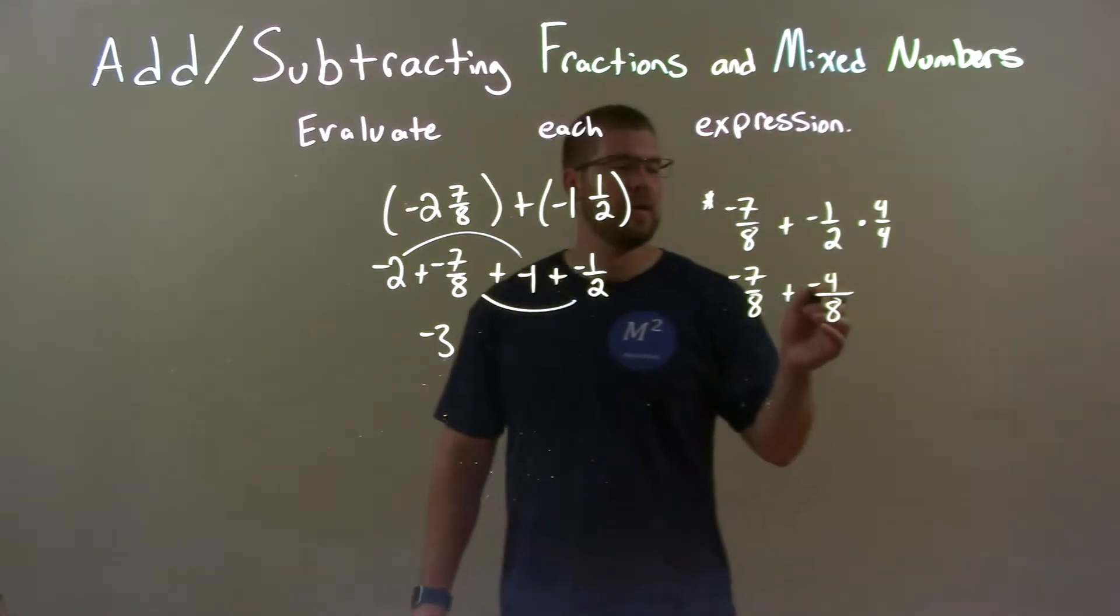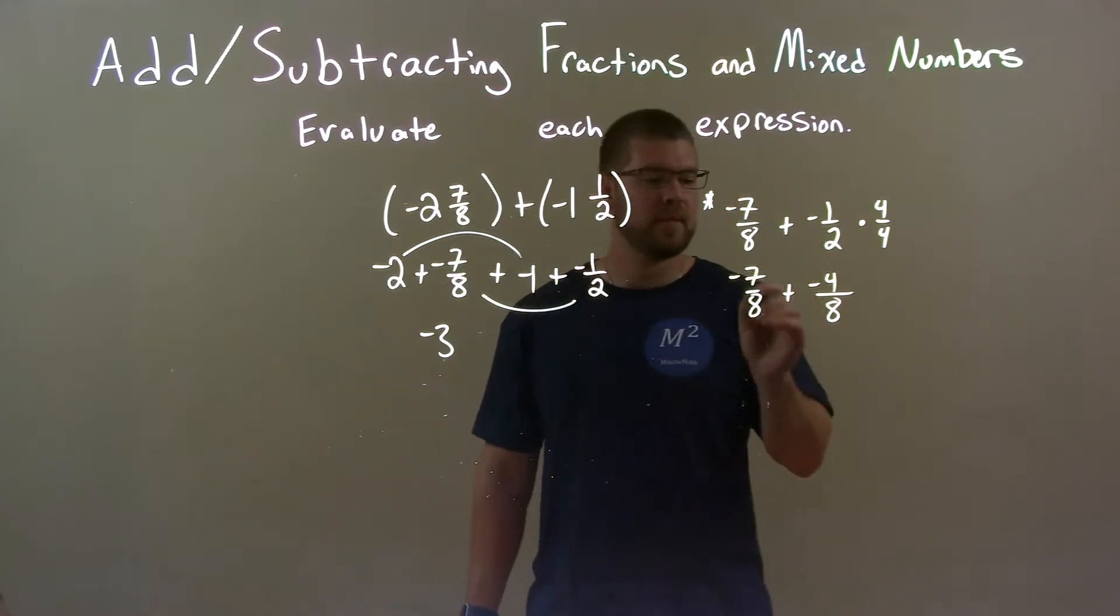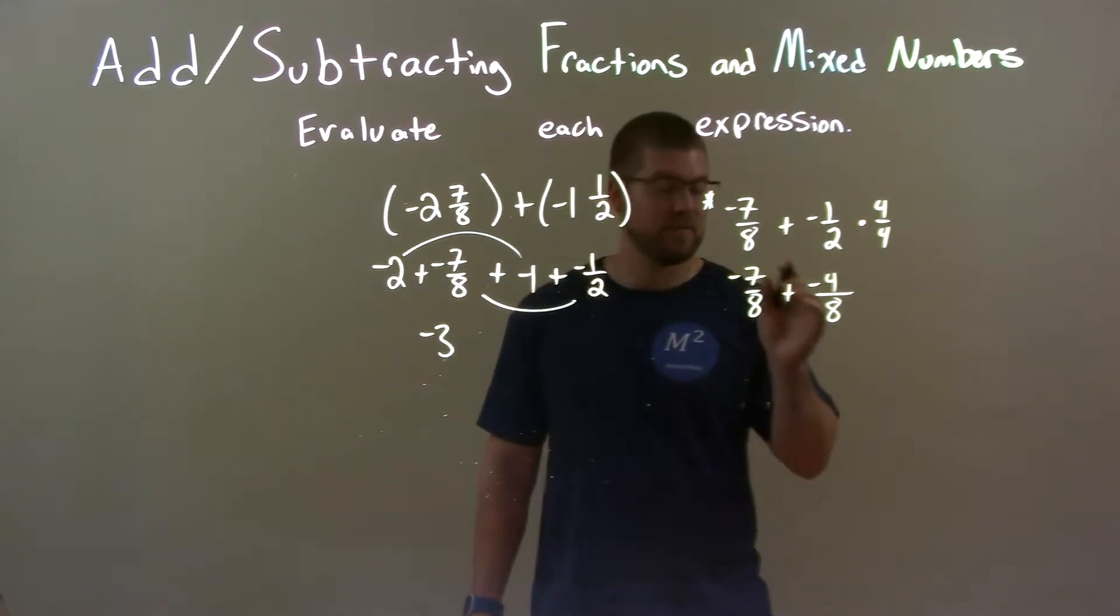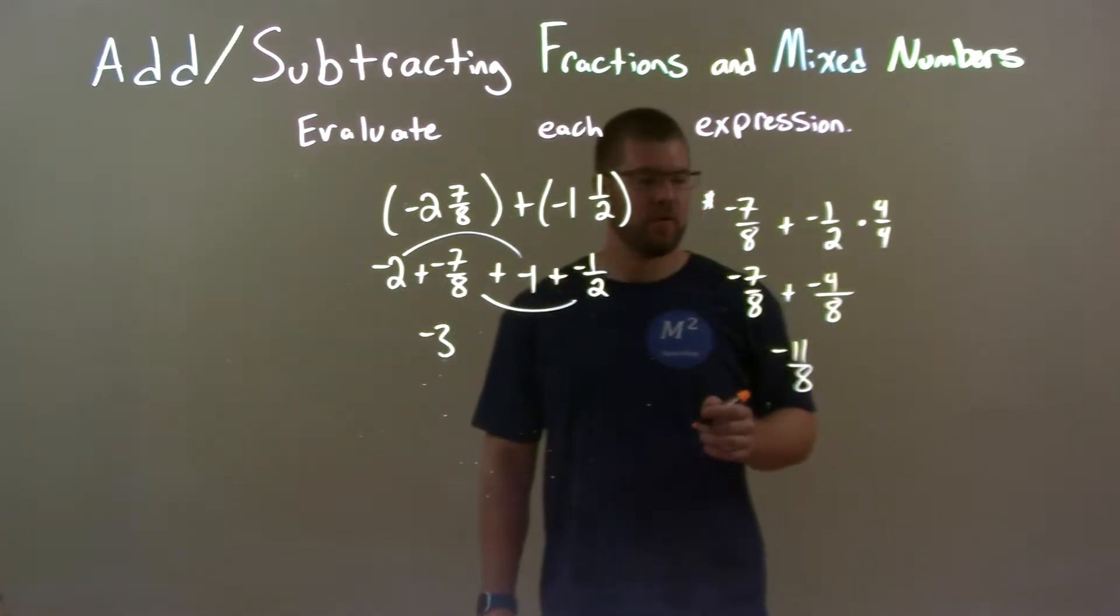Now, we have the same base, same denominator. So, we can add the numerators. Negative 7 plus negative 4 is a negative 11 over 8. So, we have negative 11 over 8.